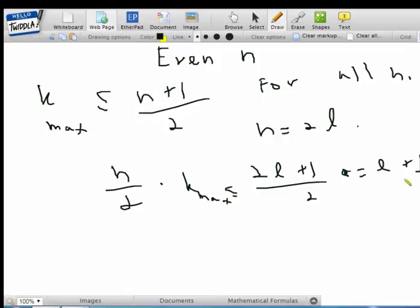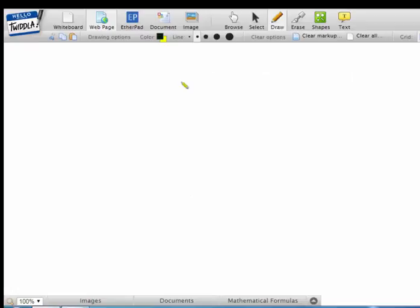And since k max has to be less than this, the highest possible option we get for k max is k max equals l, which in other words is n over 2. And now we just have to find an actual arrangement which gives us these two.